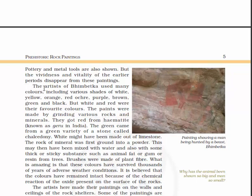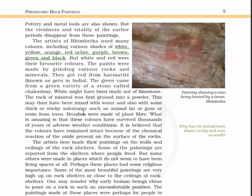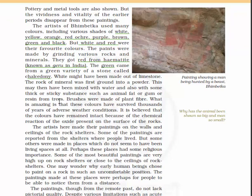The vividness and vitality of the earlier periods disappeared from the later paintings. The artists of Bhimbetka used many colors including various shades of white, yellow, orange, ochre, purple, brown, green and black, but white and red were their favorite colors. The paints were made by grinding rocks and minerals — red was obtained from hematite, known as 'geru' in India, and green came from a green variety of stone called chalcedony. White was likely made from limestone.